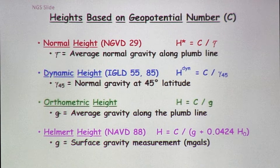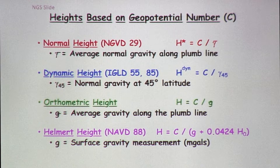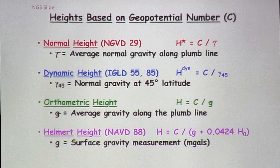On the NGS datasheet, they give you the dynamic height. So if you want to know which way water flows, that's what you can use. If you wanted to find the geopotential number and validate this, you can take the orthometric height, get the gravity values given on the datasheet, apply this formula to compute C, then turn around and compute the dynamic height.